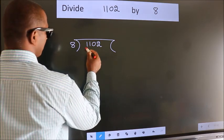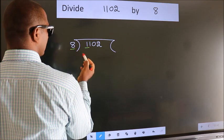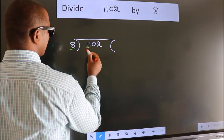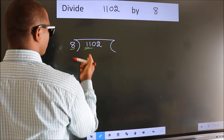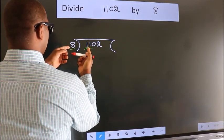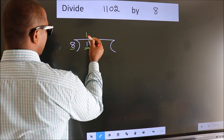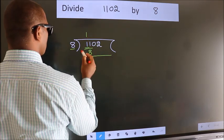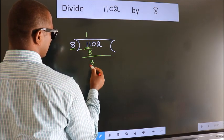Here we have 1. Here 8. 1 smaller than 8. So we should take 2 numbers. 11. A number close to 11 in the 8 table is 8 once 8. Now we should subtract. We get 3.